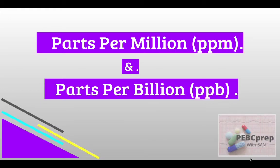Hello friends, in this video we will learn about parts per million and parts per billion. These are very minor topics and don't usually come in exams, but since we are pharmacists and will work as pharmacists in Canada, we must know all calculations. Parts per million and parts per billion are used when we have to make a very diluted solution — for example, introducing fluoride ions in water. We'll now begin.